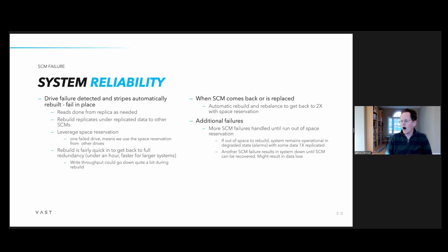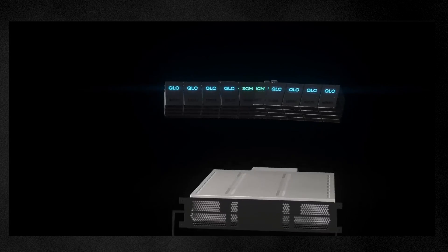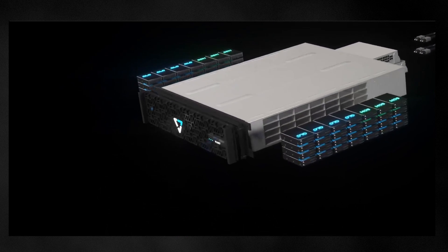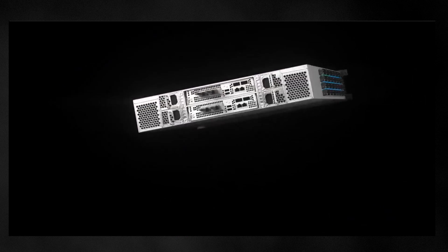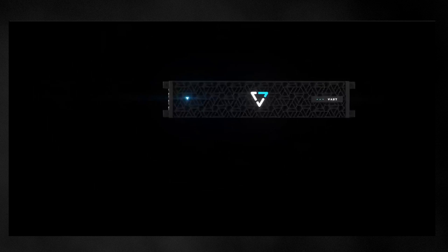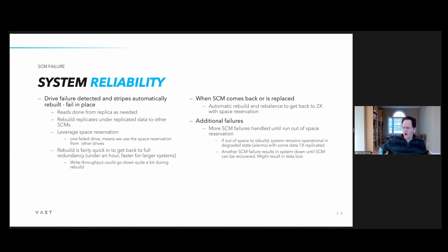For drive failures: if an SCM drive fails, the node would detect that it couldn't write to it. A C-node would say it can't reach this drive anymore, and would tell the leader. If the leader decides this is really a problem, it notifies all the nodes in the cluster that this drive is no longer valid and that a rebuild process needs to begin. The first thing that happens is all the data is replicated, so all the nodes that need to read that data just read it from the replica — no problem.